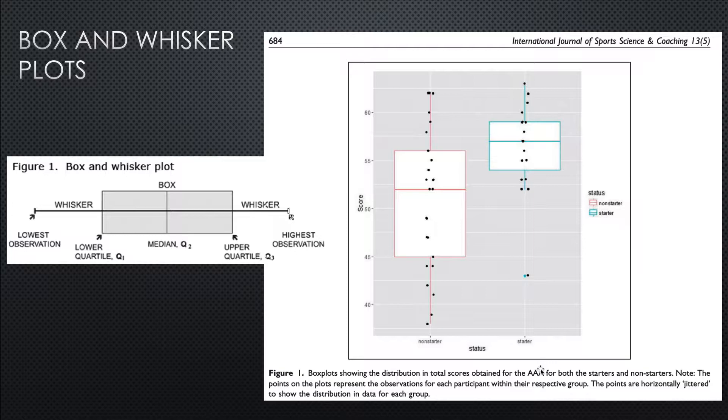They tried to find a group of tests and measurements, such as height and weight, and give all of those different measurements points to determine how good this person might be. They then used their test and compared non-starters to starters.